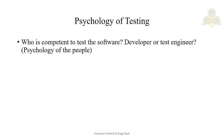The test engineer's joy has no bounds whenever they point out a bug in the software. Strictly, if the aim of the test engineer is to prove that the software does not work, then it can be considered a good testing process. If persons other than the developers test the software, they will follow this definition and this psychology brings out most of the defects.